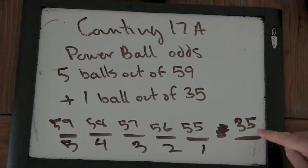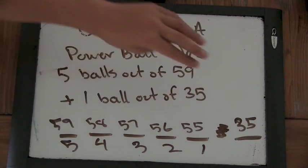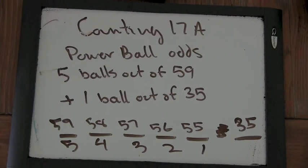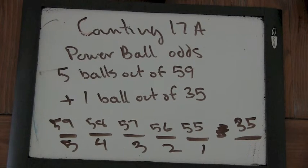And then for the separate ball, do I multiply or do I add? Well, you multiply. Why? Because for every one arrangement of the Powerball you have all of these arrangements for the regular balls. Yeah.